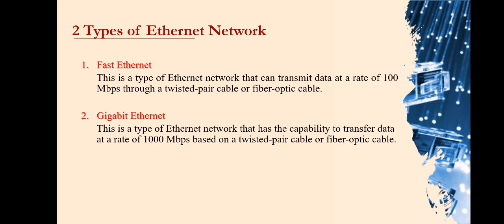Next is Gigabit Ethernet. This is a type of Ethernet network that has the capability to transfer data at a rate of 1000 Mbps, based on a twisted pair cable or a fiber optic cable. Among other types of Ethernet, this is the most popular one.